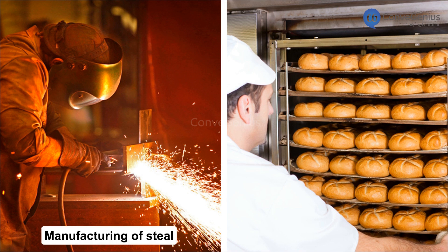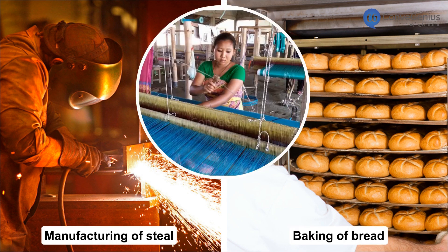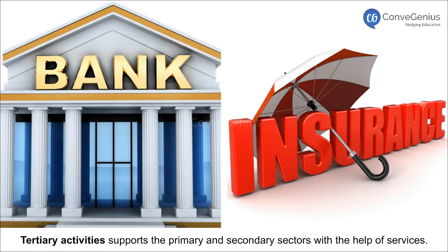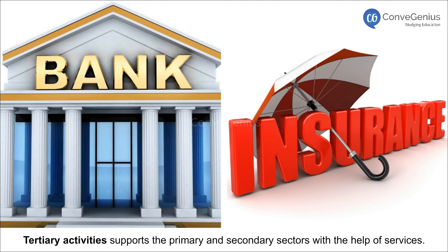Examples of secondary activities include manufacturing of steel, baking of bread and weaving of cloth. Tertiary activities support the primary and secondary sectors with the help of services. Examples include banking, insurance, transport, etc.